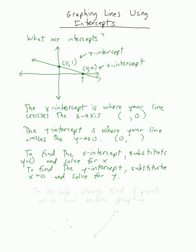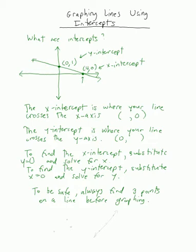So these are the two steps for finding the intercepts. Since two points make a line, you only need to find the x and y intercepts to graph a line. Usually to be safe, always find three points on a line before graphing. This is just a way to check your work, because you're never going to have three points that line up perfectly if you made a mistake. If you do three points and they don't line up, then you know at least one is wrong. But if all three of them lie in a row, then you know that your answer has to be right.